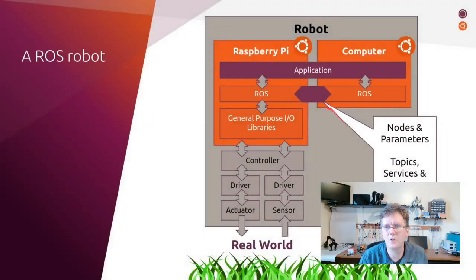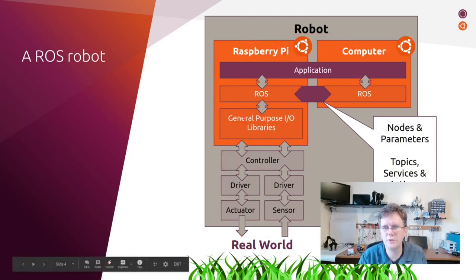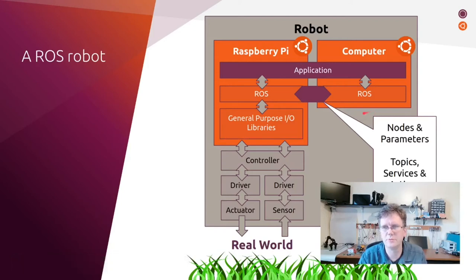Looking at how ROS fits in as middleware: we write ROS applications that take advantage of the rich libraries provided with ROS. ROS also gives us a communications layer so we can spread an application across multiple computers, or move nodes around on the same or different machines. I still need I/O to control parts of the robot and read from sensors — all done through one set of standard constructs that ROS exposes: nodes, parameters, topics, services, and actions.